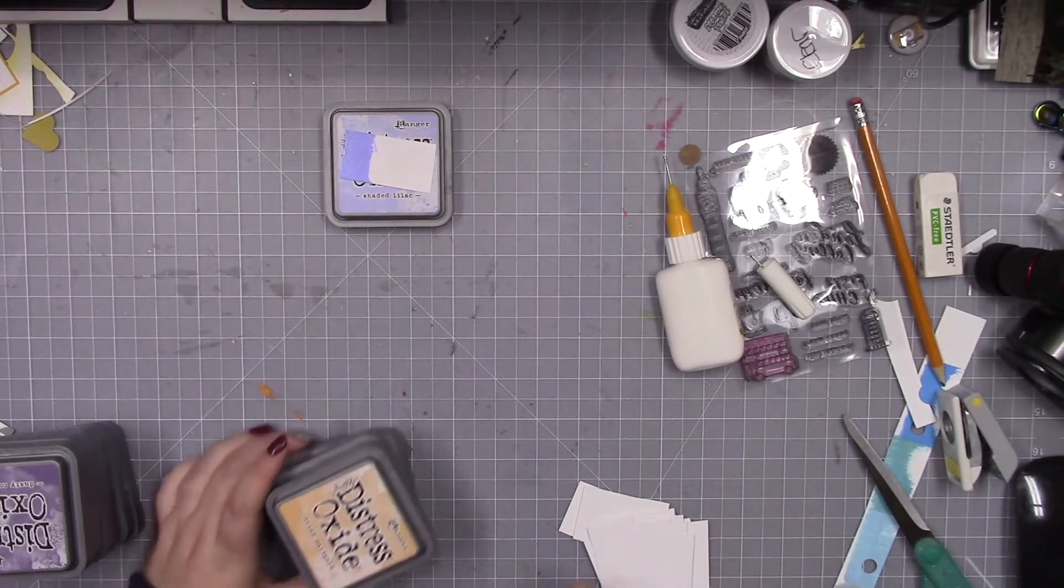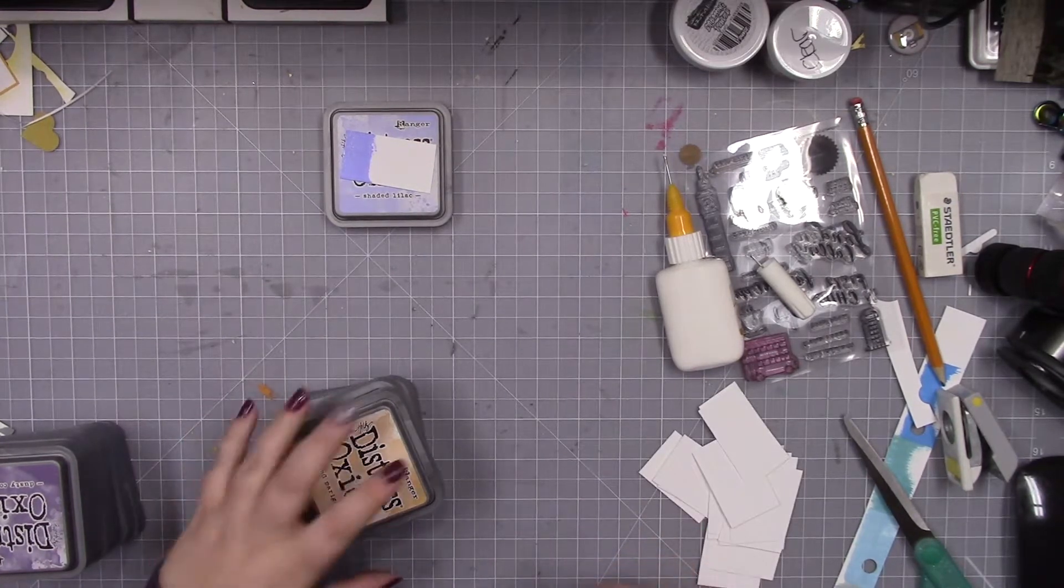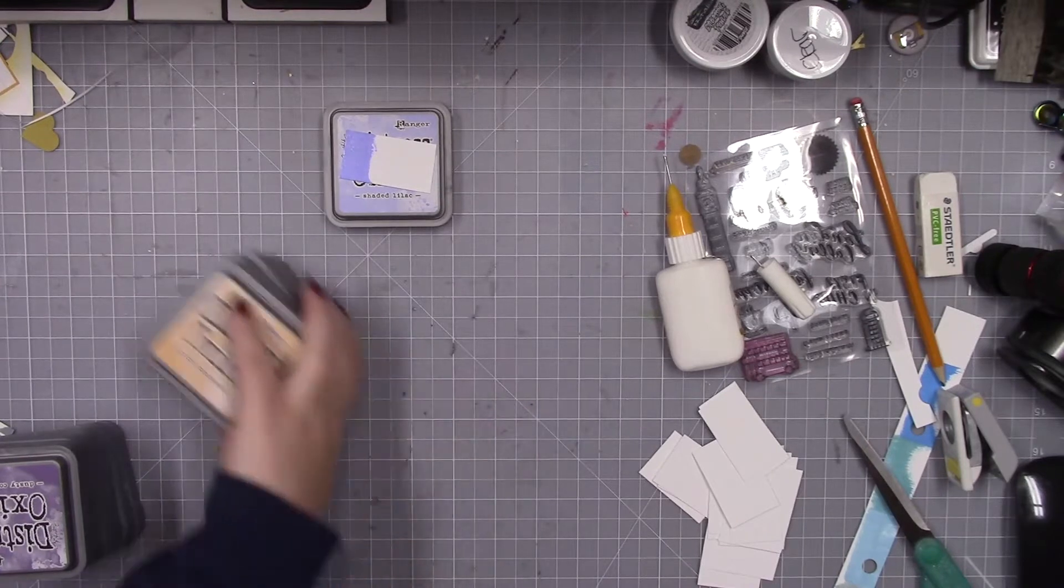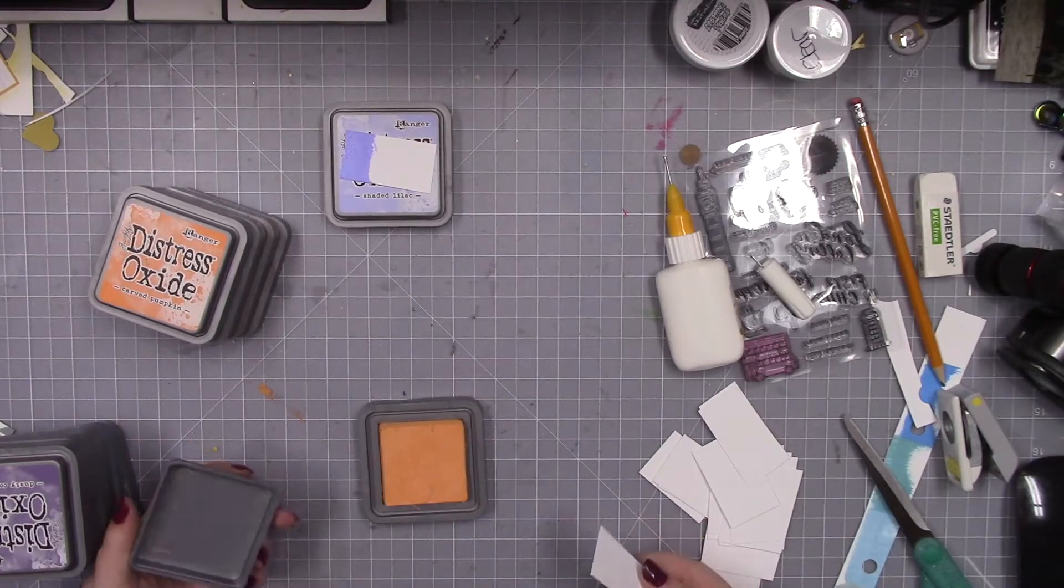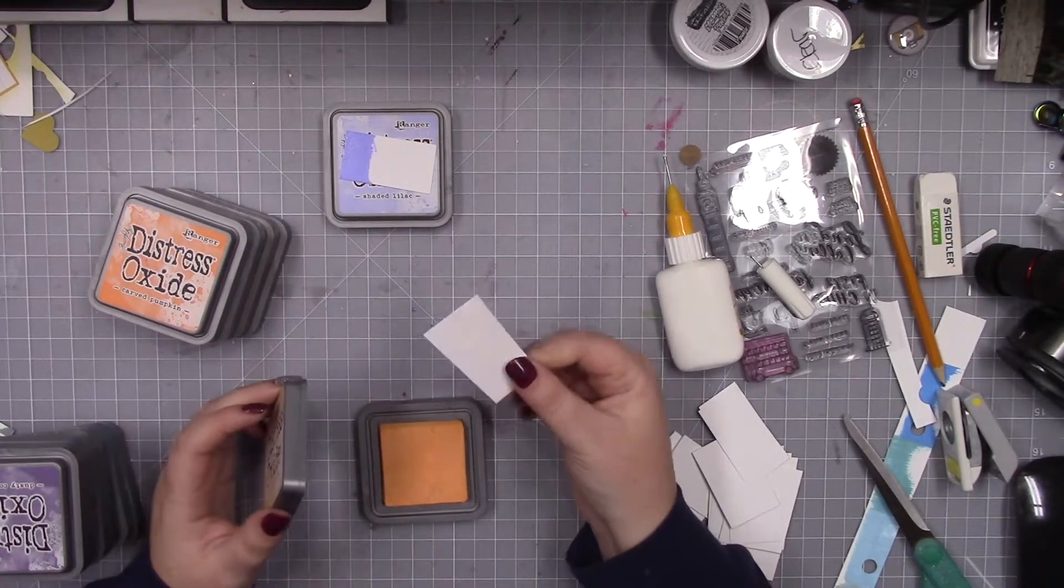Hi everyone, I wanted to make this super quick video to show you how I'm swatching out my oxide inks. I cut these little strips of paper